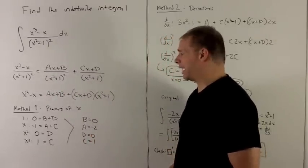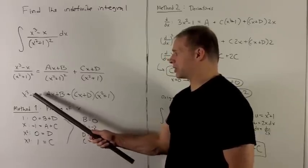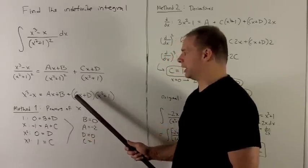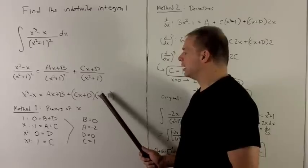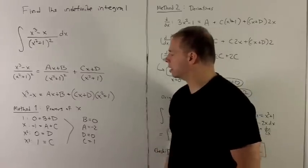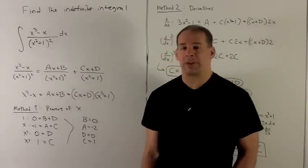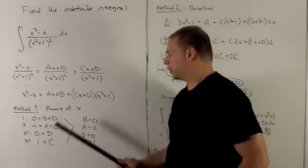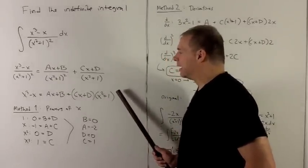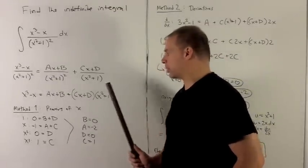I clear denominators, so that's going to give me x cubed minus x equals ax plus b plus cx plus d, x squared plus 1. So the first method, which is probably the method you'd want to use, is just to expand this side entirely and then match up powers of x on both sides.